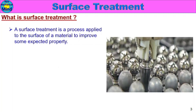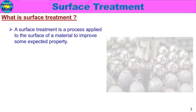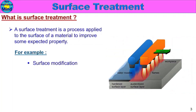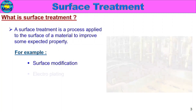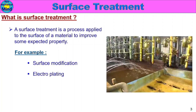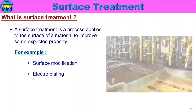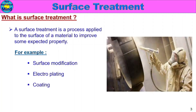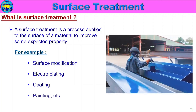What is the process of Surface Treatment? For example: Surface Modification — the surface is going to be modified. Electroplating, Plating, Coating, Surface Coating, Painting, etc. These are the processes applied to the surface.